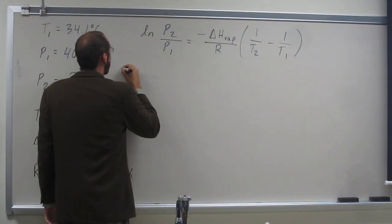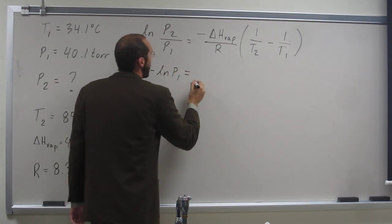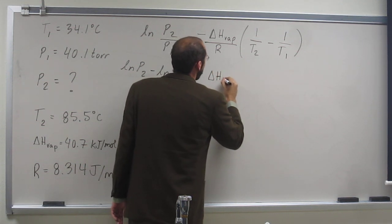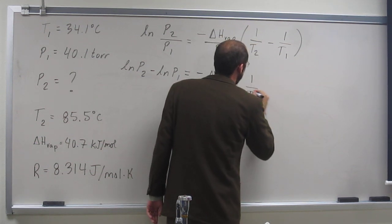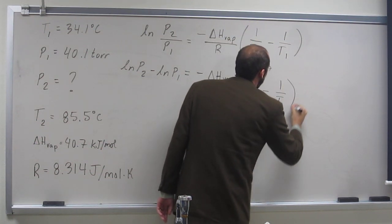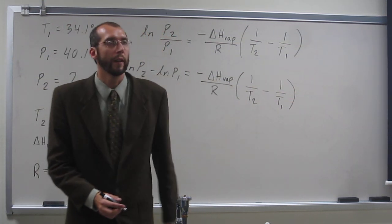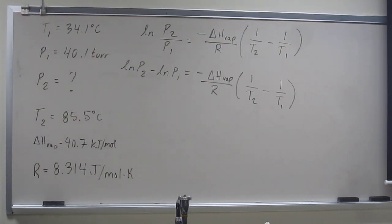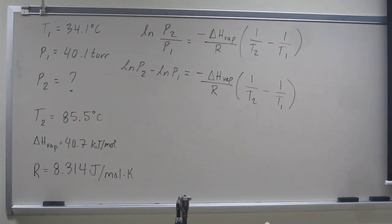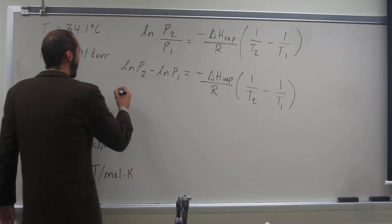So we go Ln of P2 minus Ln of P1 equals negative delta H over R times 1 over T2 minus 1 over T1. So we could, if we wanted to, take this over to the other side and isolate it. Honestly, with these problems, if you start doing that, I've seen a lot of undergraduates kind of get mixed up. So why don't you just plug and chug with these ones?